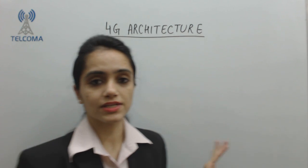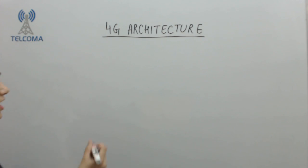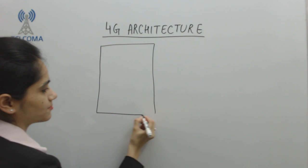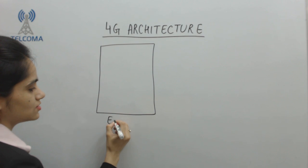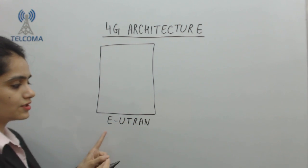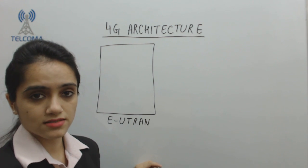Today we are going to discuss 4G architecture. The 4G architecture consists of parts, with the very first being the RAN part. We name it as EUTRAN, which is Evolved Universal Terrestrial Radio Access Network.